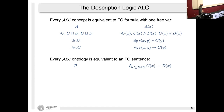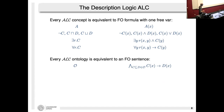The semantics can be understood by translating to standard first-order logic. Concept names are unary relations; Boolean operators are the Boolean operators. For the quantifiers: the existential quantification ∃r.C translates to a formula with one free variable x — there exists a y such that r(x,y) and y satisfies C. The universal quantification ∀r.C says: whenever there is an r-edge to some y, that y must be a C. If you're familiar with modal logic, ALC is essentially modal logic with diamond and box operators.